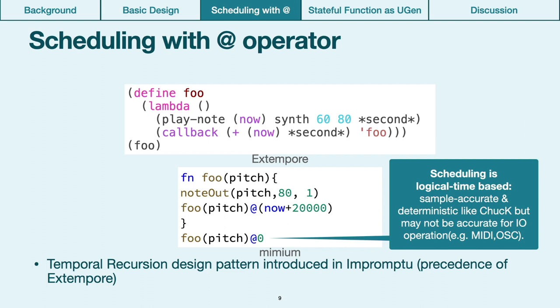Mimium's scheduling strategy is based on logical time, the same as Chuck, which means that operation is deterministic and sample accurate as long as the code does not contain IO operations, such as MIDI and network exchange like OSC. In contrast, Extempore uses asynchronous task scheduling, which takes accuracy including IO exchange into account as much as possible. However, this approach increases the complexity of implementation. At this time, we prioritize the simplicity of the implementation.